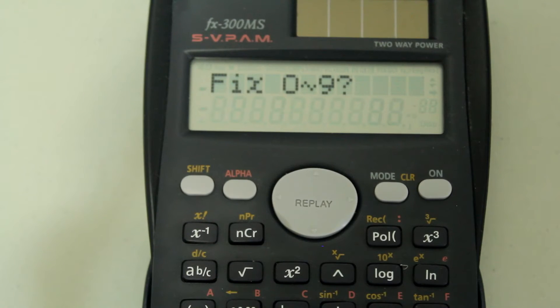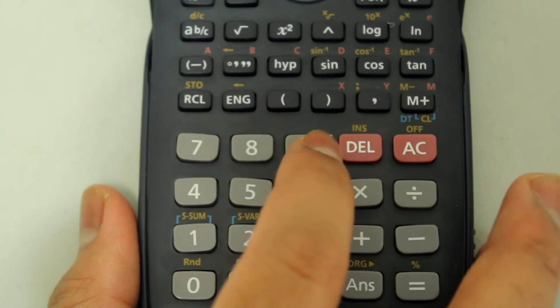The screen shows fix with 0 through 9 and a question mark. If you hit 0, the answer will be displayed in the nearest whole number. If you hit 9, the answer will display as many decimal places as the screen can display. So let's go ahead and press 9.